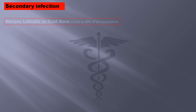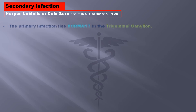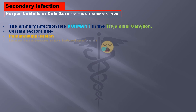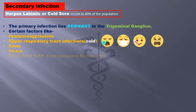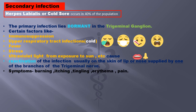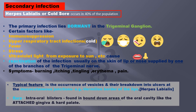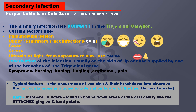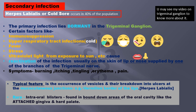The secondary infection is also called herpes labialis or cold sore, and it occurs in 40% of the population. The primary infection lies dormant in the trigeminal ganglion. Certain factors such as immunosuppression, upper respiratory tract infection, fever, stress, and ultraviolet light from sun exposure can cause reactivation of the infection, usually on the skin of the lip or nose, which is supplied by one of the branches of the trigeminal nerve. Symptoms include burning, itching, tingling, erythema, and pain. Vesicles form and break down into ulcers at the mucocutaneous junction, like the vermilion border of the lips — this is called herpes labialis. Rarely, intraoral blisters are found in bound-down areas of the oral cavity such as the attached gingiva and the hard palate.